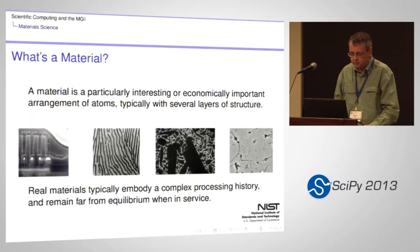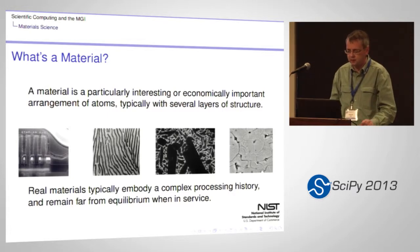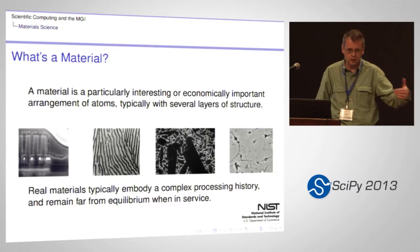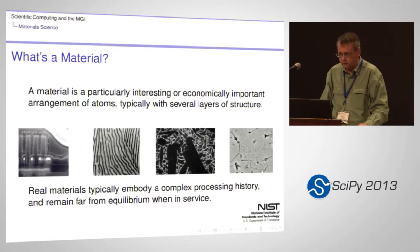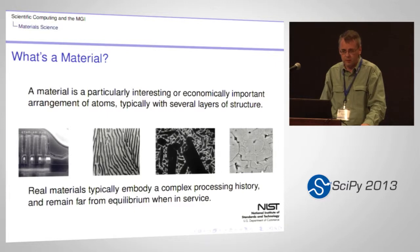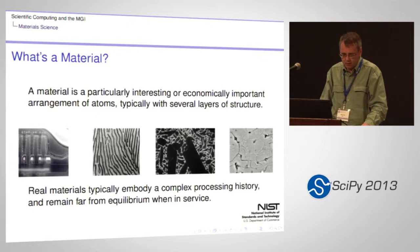So what is a material? A material is an interesting or economically important arrangement of atoms, and typically it has many layers of structure. There is the chemical composition, broken up into several domains, each domain has some property, the domains are arranged in a certain way, and the result is that at the global level this thing does something you want — and maybe one or two things you don't want. Real materials embody their processing history. They are never in equilibrium — not when they're formed, not when you process them, and not when they're in service — which complicates the analysis process.